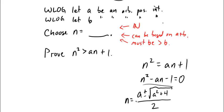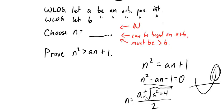So when is n squared minus a·n minus 1 greater than 0? The larger n gets, the larger this term gets, so it's a parabola opening upward. I want it to be greater than 0, so I want n to be beyond the larger root — I don't want n equal to that root, I really want n to be greater than it.